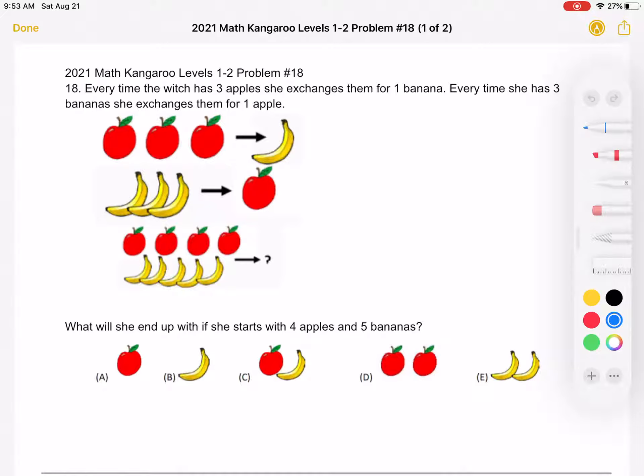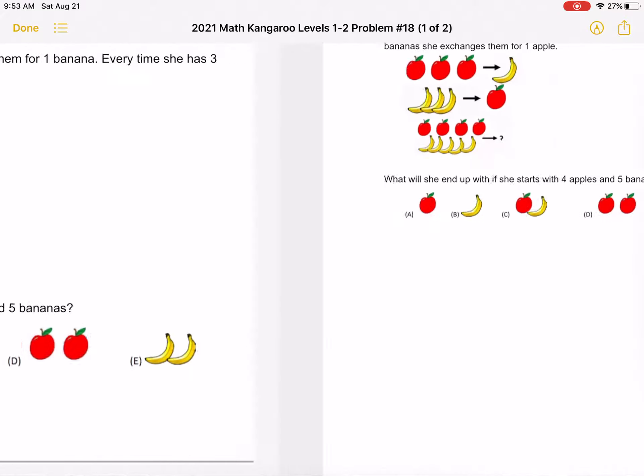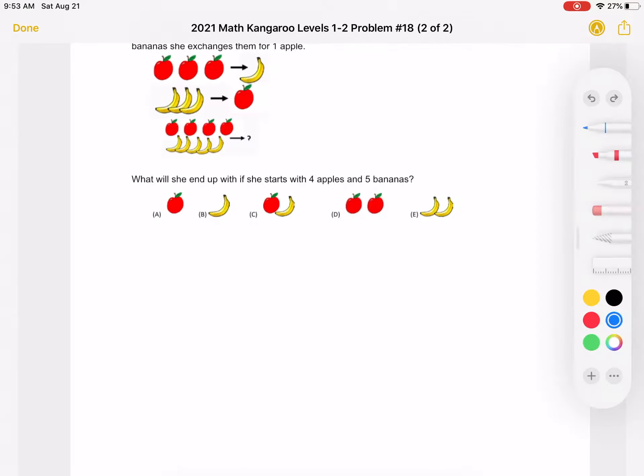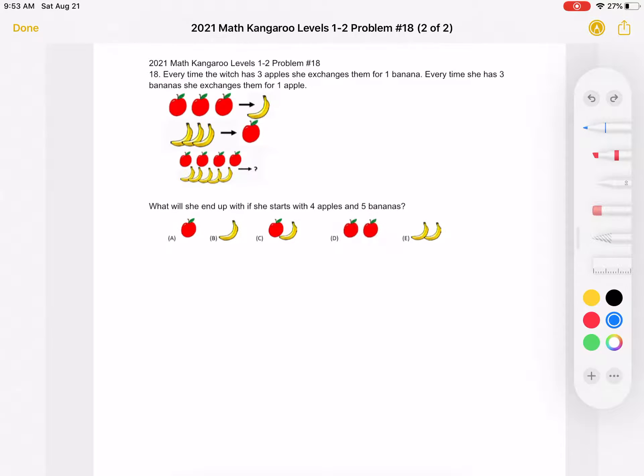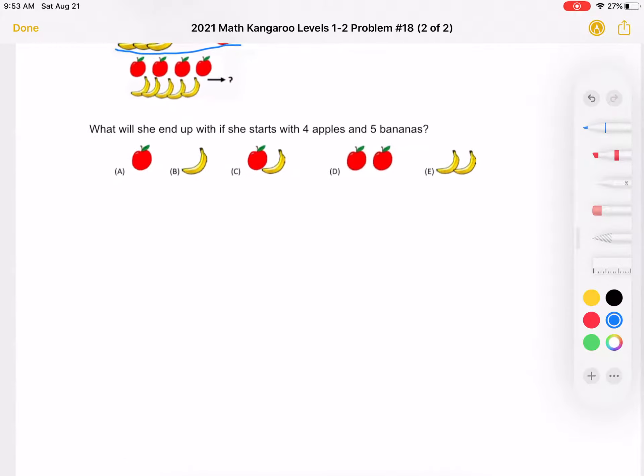This is the problem as it originally appeared on the test and here is where we'll be doing the solution. So again, she can only make two exchanges. She can either take three apples and turn them into a banana or take three bananas and turn them into an apple. So let's get started.